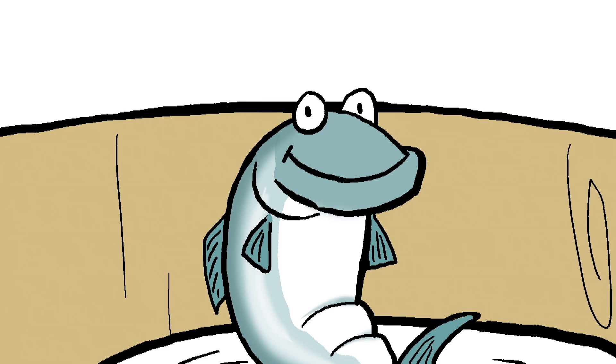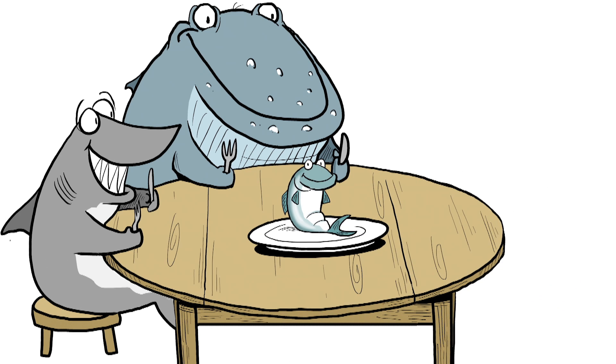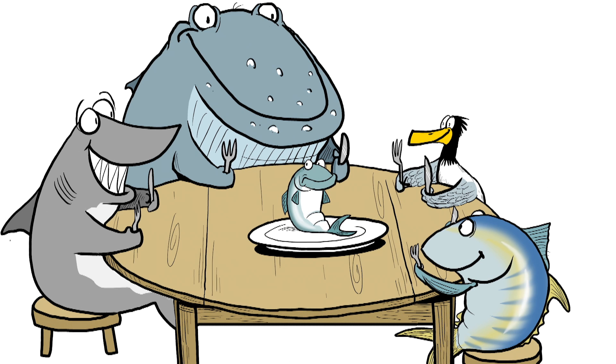But forage fish are a critical food source for a bunch of different species, from sharks and whales, to seabirds, tunas, seals, and sea lions.